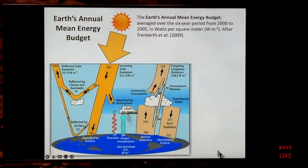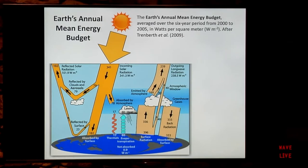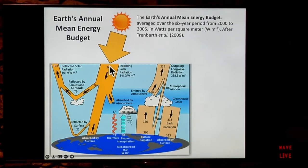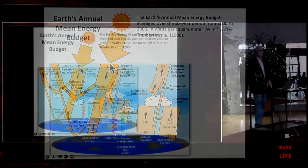What this shows is the flow of energy through the Earth's system, beginning with incoming solar radiation. This diagram basically shows how that energy flows through the system. This is averaged over the entire face of the Earth, averaged over day and night, averaged over all four seasons. The numbers on this slide are averaged over a six-year period from 2000 to 2005, and the numbers depict flux of energy in watts per square meter.